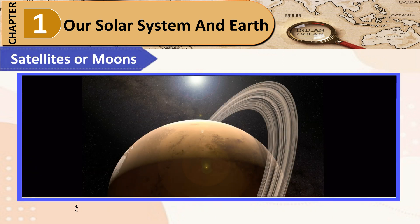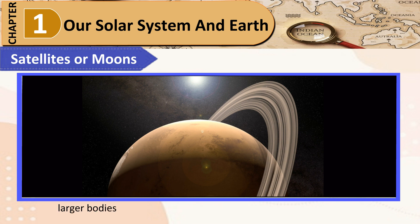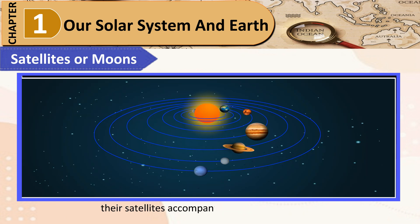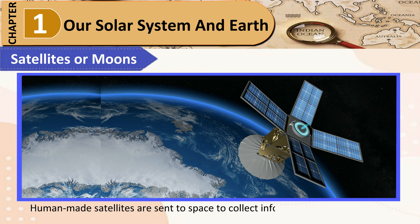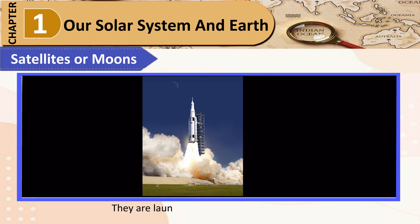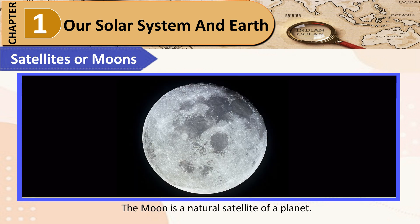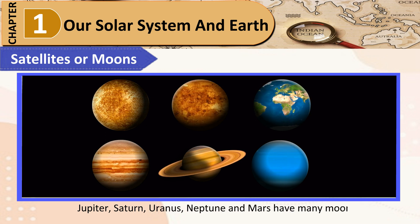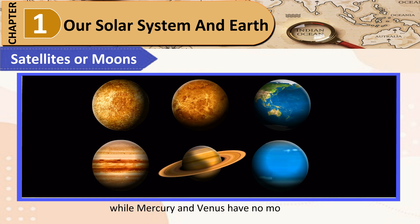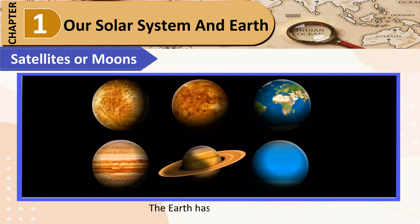Satellites or Moons: Satellites are smaller celestial bodies which revolve around larger bodies, generally the planets. As planets move around the Sun, their satellites accompany them in their revolution. Satellites may be human-made or natural. Human-made satellites are sent to space to collect information on celestial bodies and are launched into orbit using rockets. The Moon is a natural satellite. Jupiter, Saturn, Uranus, Neptune, and Mars have many moons, while Mercury and Venus have no moons at all. The Earth has only one moon.